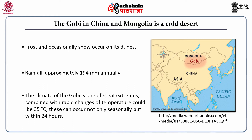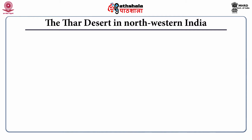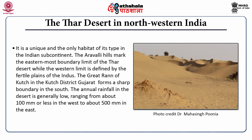This map shows the areas to which the Gobi desert extends. The Thar desert in north-western India is a unique habitat, the only of its type in the Indian subcontinent. The Aravalli hills mark the easternmost boundary, while the western limit is defined by the fertile plains of the Indus. The Great Rann of Kutch in Gujarat forms a sharp boundary in the south. Annual rainfall ranges from about 100 mm or less in the west to about 500 mm in the east.